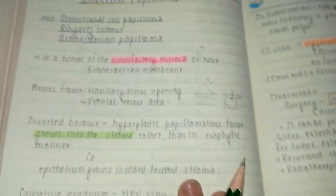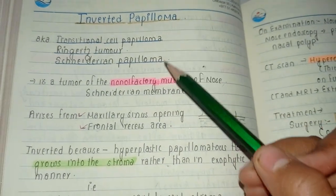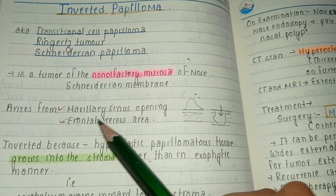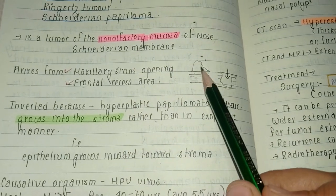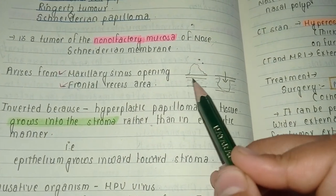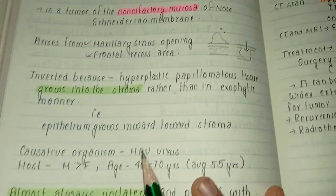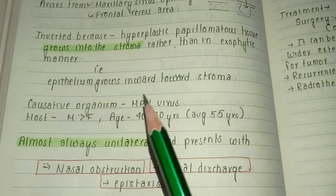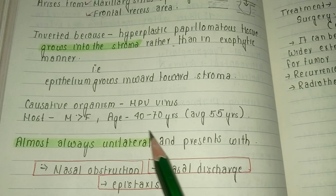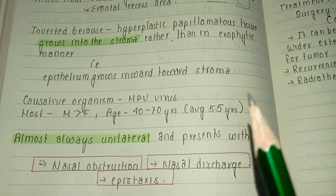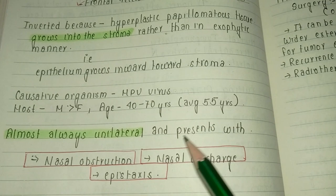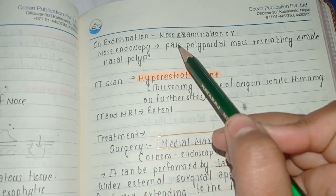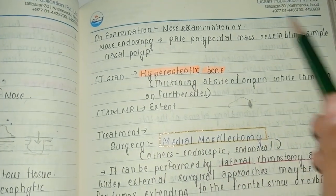Key points to remember: it arises from the non-olfactory mucosa of the nose, from the maxillary sinus opening or frontal recess area. It is called inverted because rather than growing upward in an exophytic manner, it grows inward into the stroma. The causative organism is human papilloma virus. It occurs more in males, aged 40 to 70 years, and is almost always unilateral. The patient presents with nasal obstruction, nasal discharge, and epistaxis.